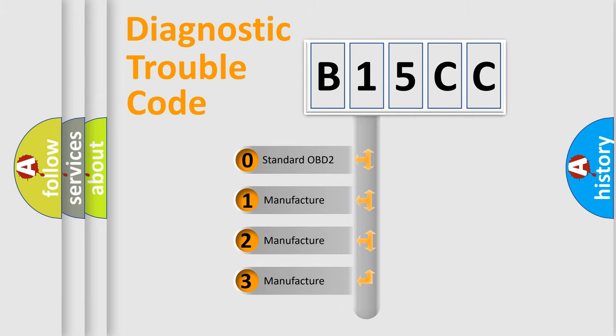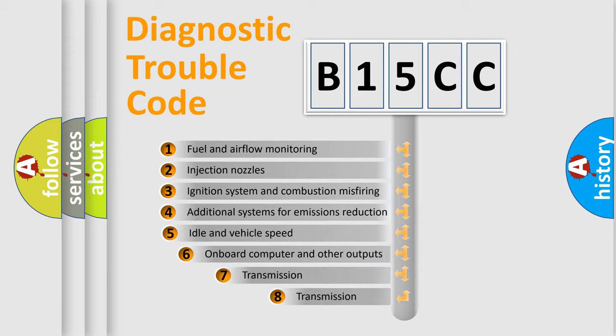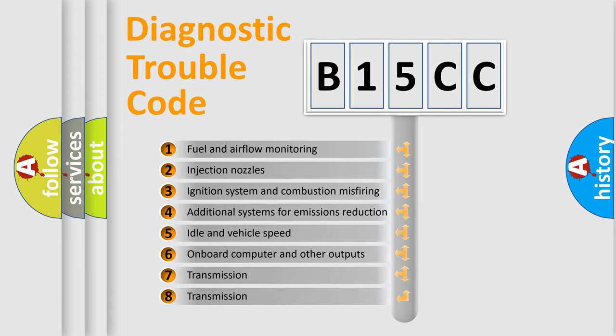If the second character is expressed as zero, it is a standardized error. In the case of numbers 1, 2, or 3, it is a manufacturer-specific expression of the car-specific error. The third character specifies a subset of errors.